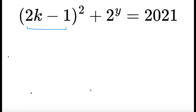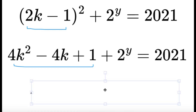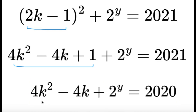Since x is odd, we can make the substitution x = 2k minus 1. Expanding (2k − 1)², we get 4k² − 4k + 1. Subtracting 1 from both sides, we end up with 4k² − 4k + 2 raised to y equals 2020.